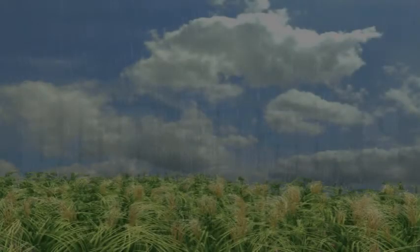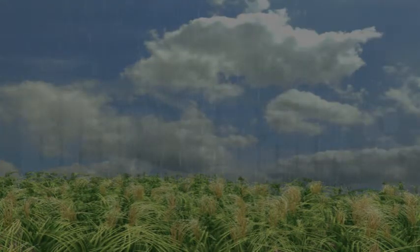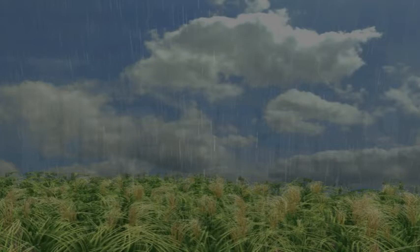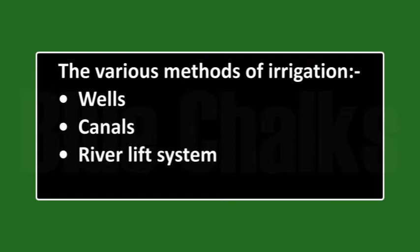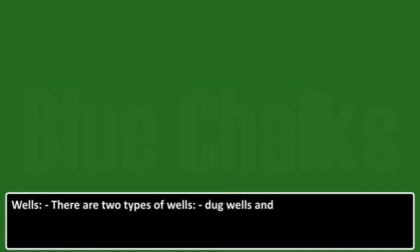Irrigation. The crop production in India is mainly dependent on timely monsoon and required rainfall. When the crop gets water at the right time during the growing stage, the yield of the crop increases. The various methods of irrigation are wells, canals, river lift systems, and tanks. There are two types of wells: dug wells and tube wells.